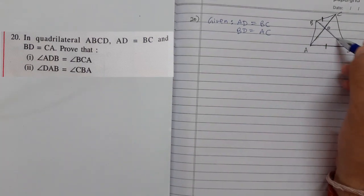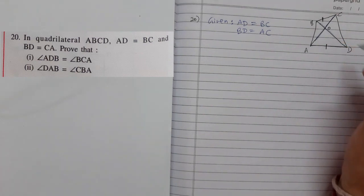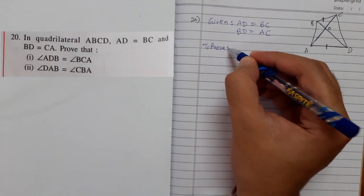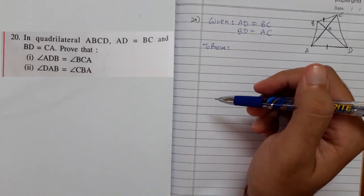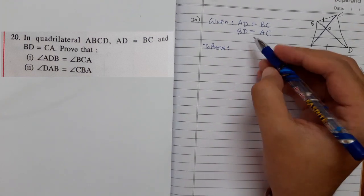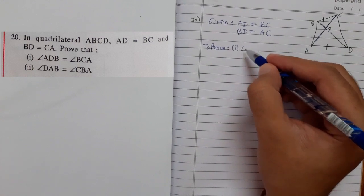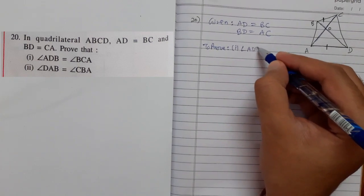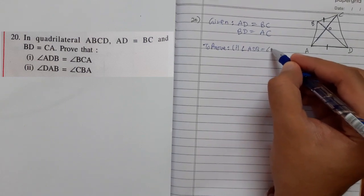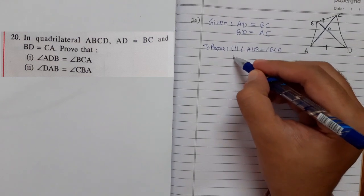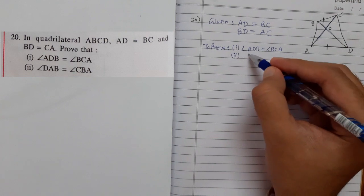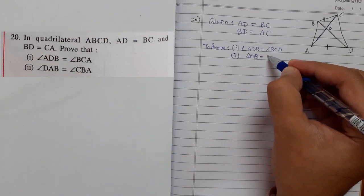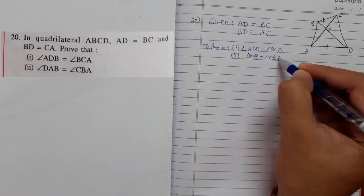What do we need to prove? I love congruency of triangles because it is very easy. In this question they are asking us to prove that angle ADB equals angle BCA, and second thing is angle DAB equals angle CBA.